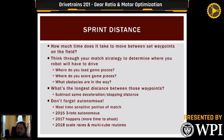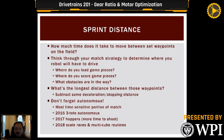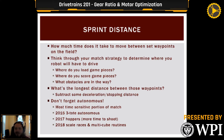It starts with figuring out where your sprints are on the field — what are your sprint distances, how much time does it take to move between point A and point B? This is a great team exercise even if you're not looking to optimize your drivetrain. Look at where you load game pieces, where you have to score them, what you have to go around to get between those points, and then identify the longest distance between those waypoints.